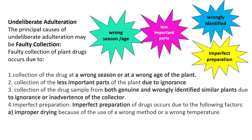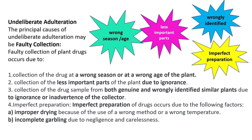Imperfect preparation occurs due to the following factors: improper drying because of the use of a wrong method or wrong temperature, and incomplete garbling. Garbling means removal of dirt — for example, spreading or turning paddy during drying. Improper processes due to negligence and carelessness can also undeliberately cause adulteration, including improper packing.